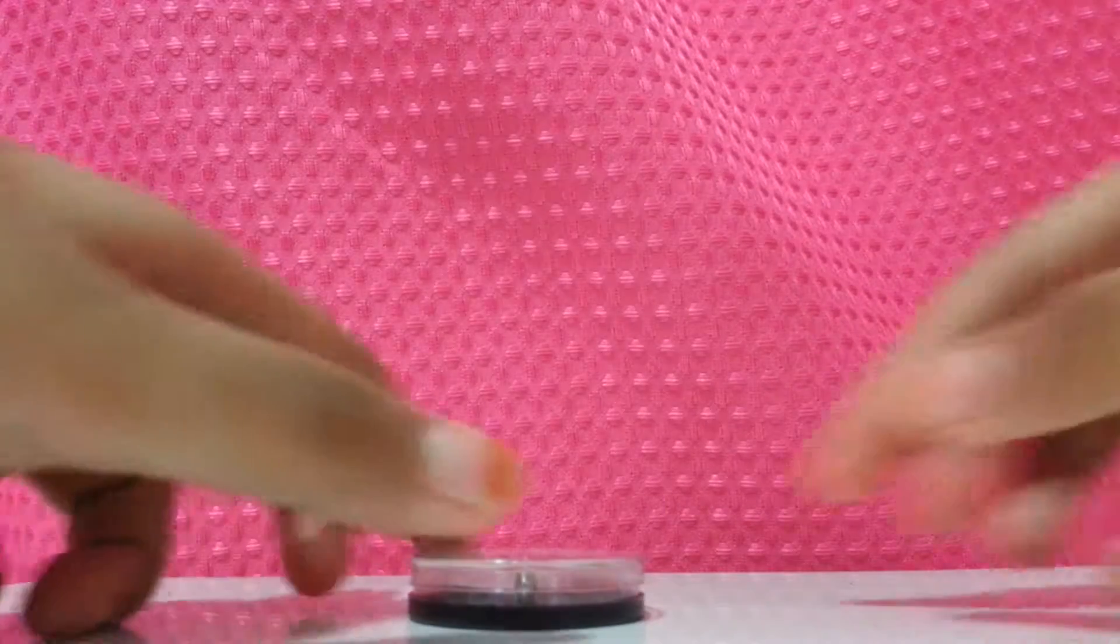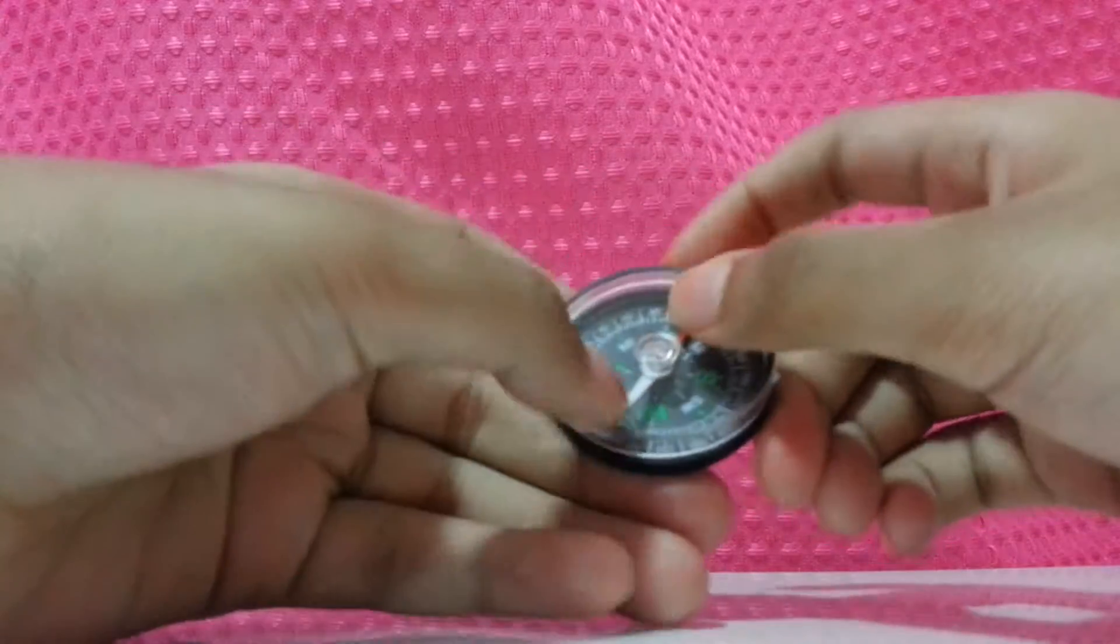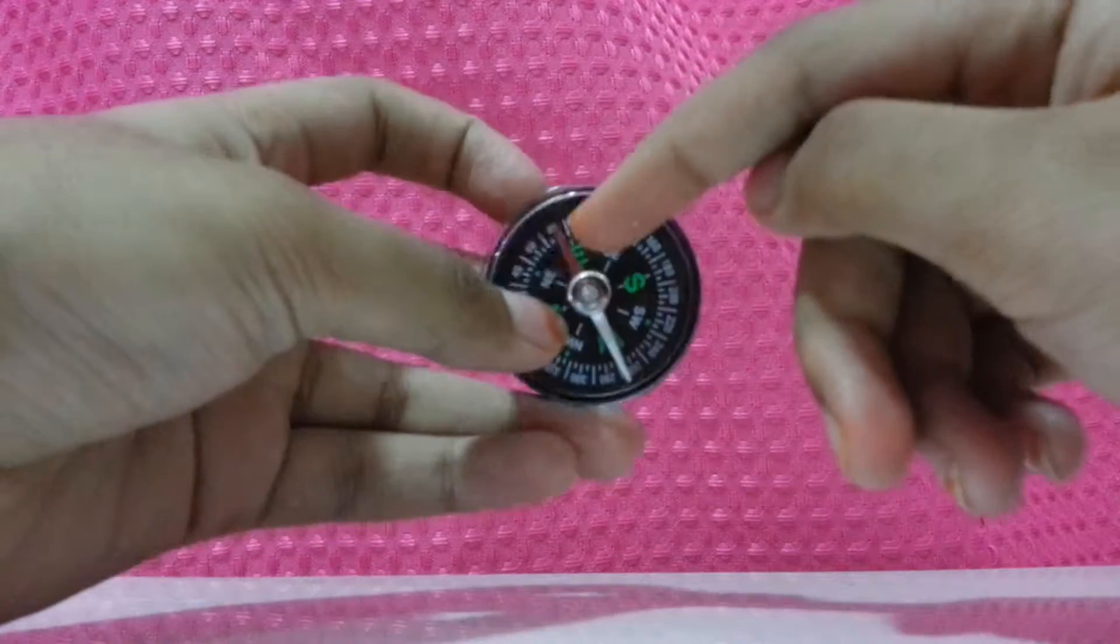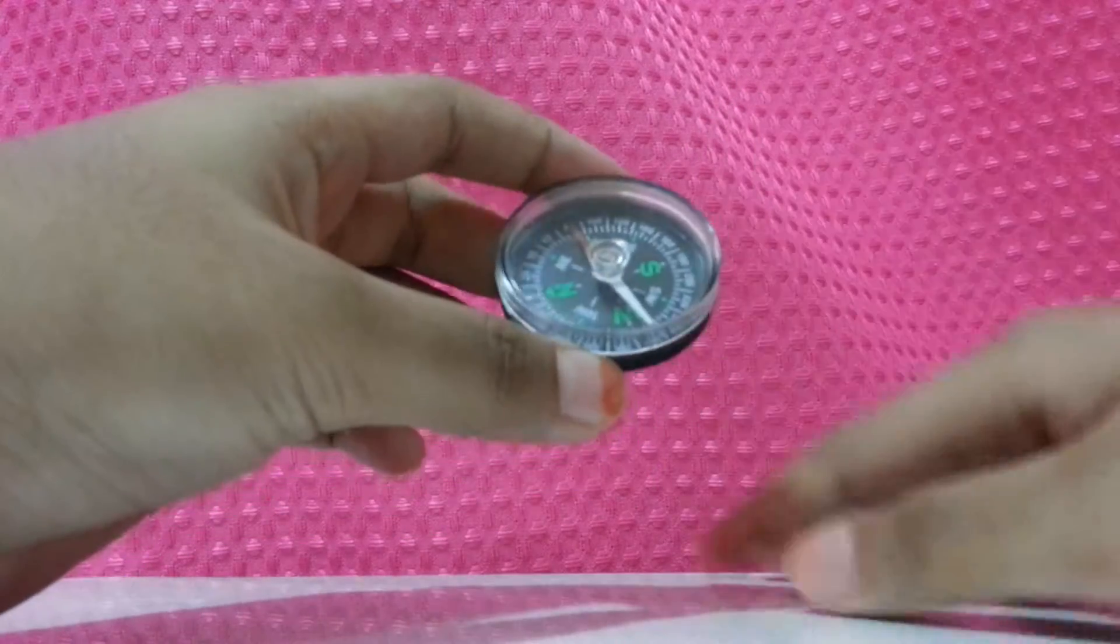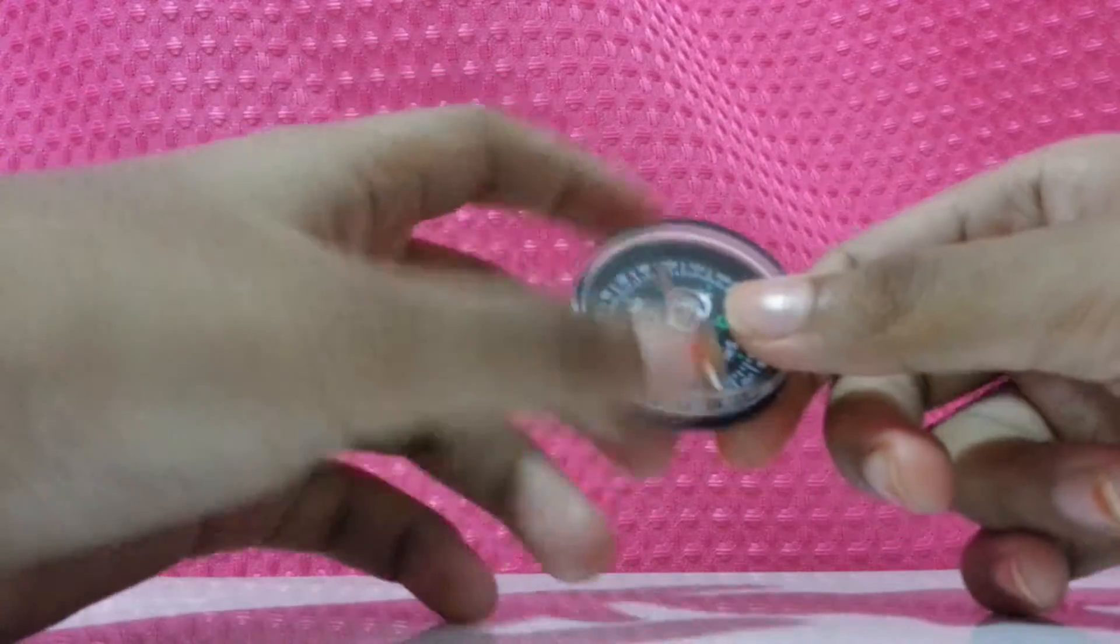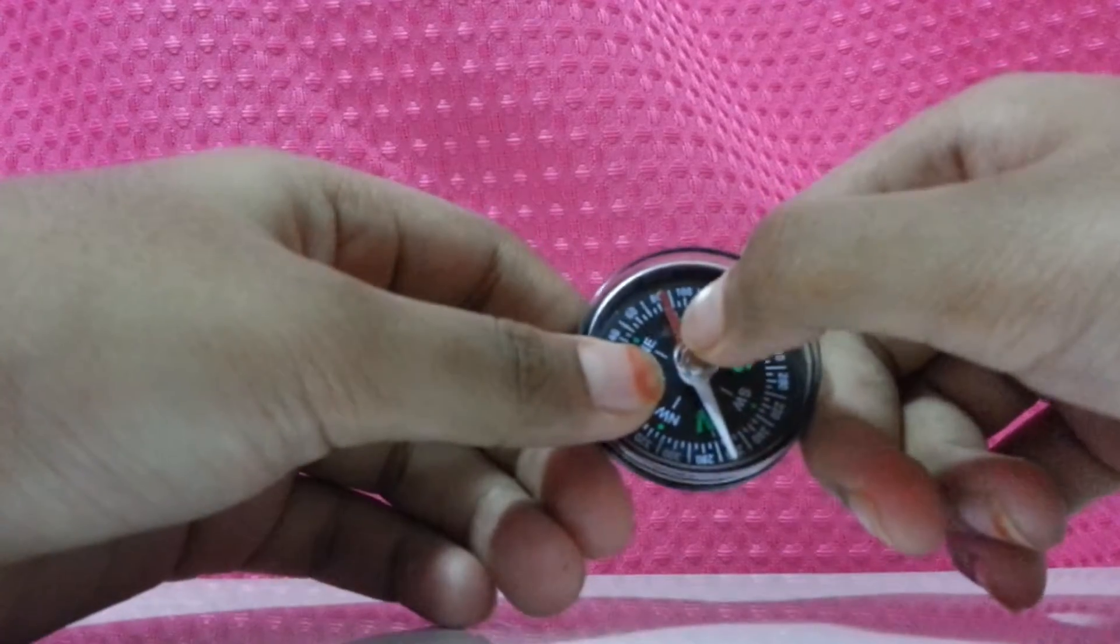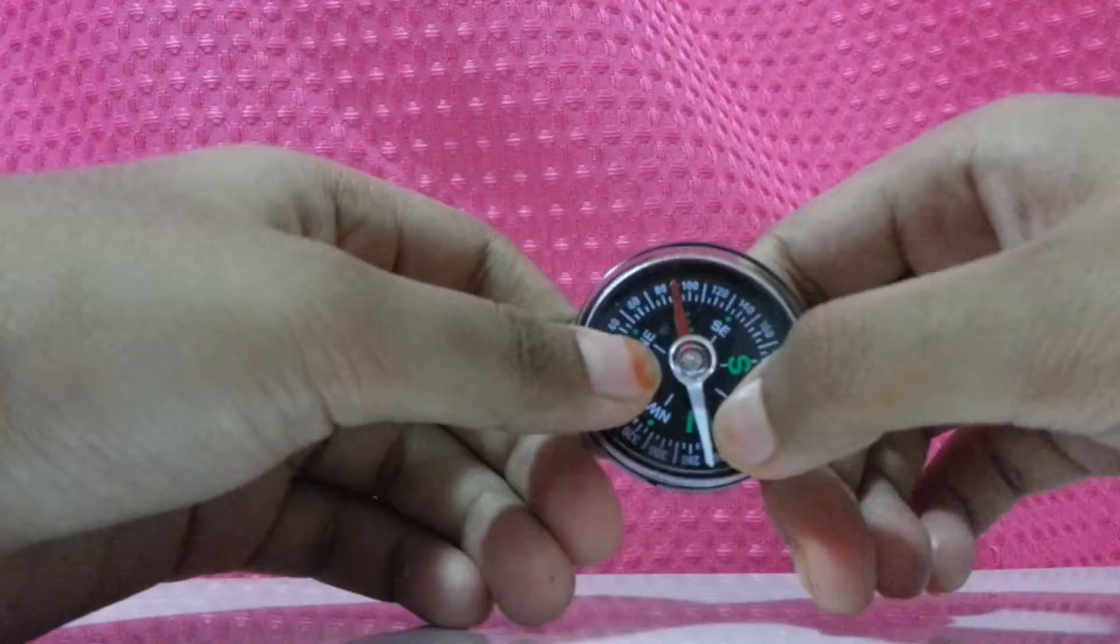We all know that a compass is an instrument which is used to see your location. It is usually used by travelers to see the location. So you see this red one, this is the north. The white one is south.